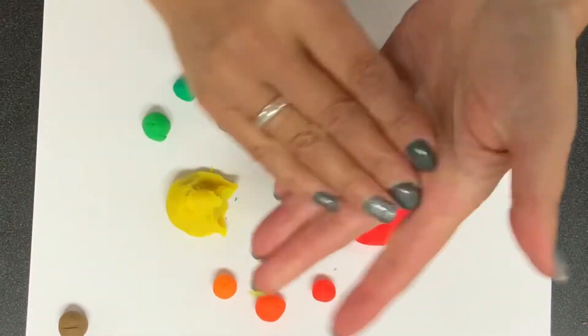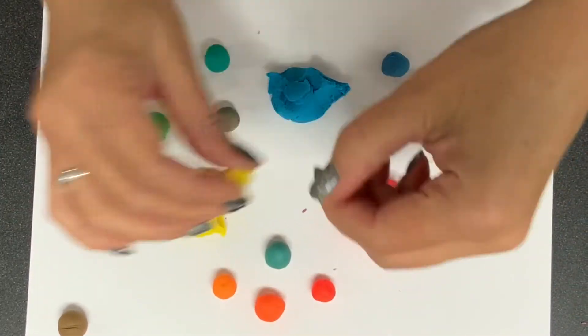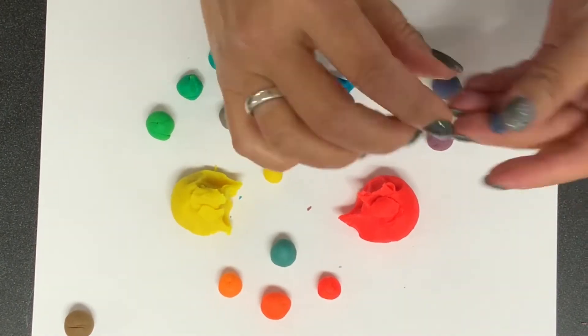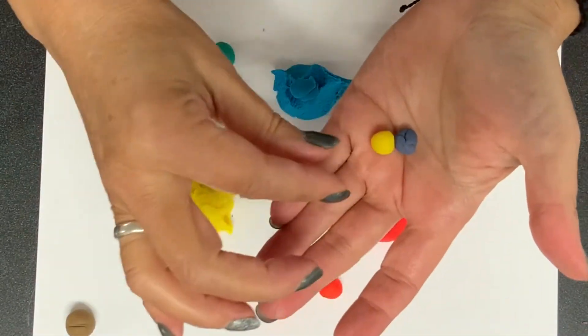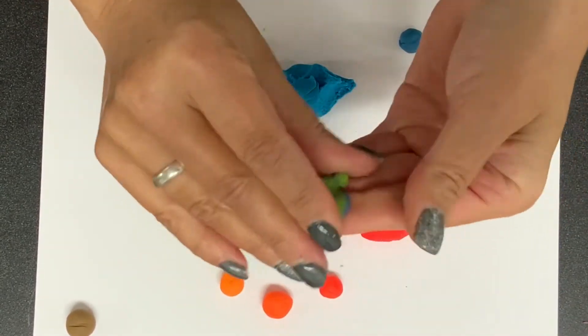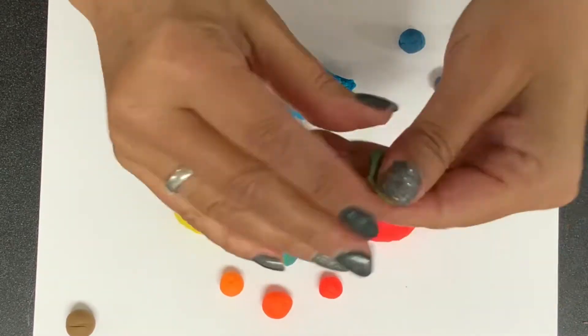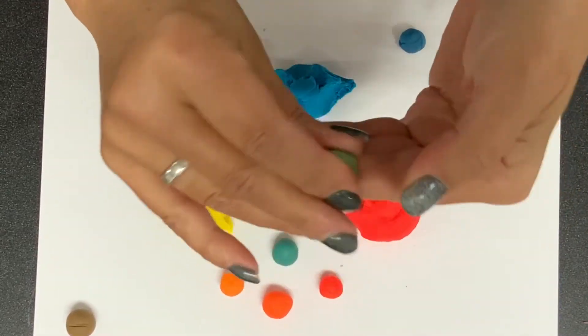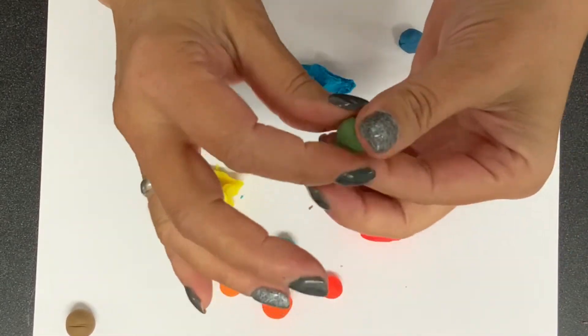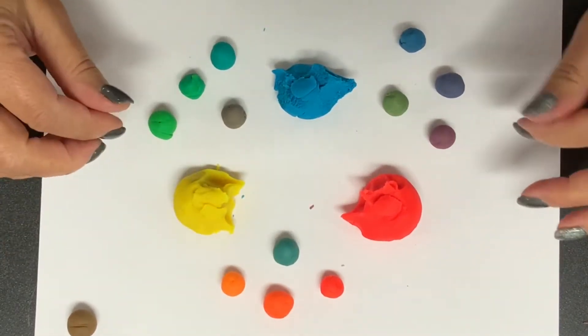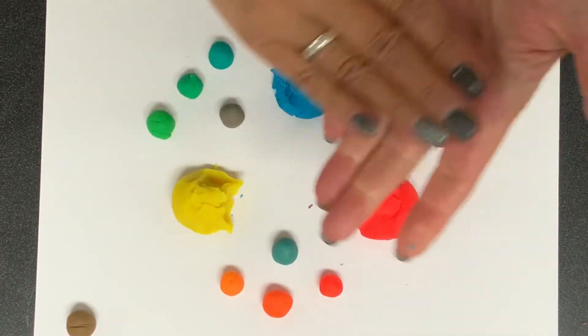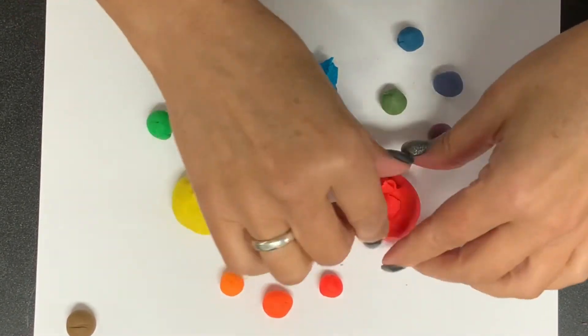And then we are going to take a pea-sized amount of yellow and then a pea-sized amount of, you guessed it, violet. And we're going to mix those together. Violet and yellow are complementary colors as well. So when you have a client that has a yellow base to their hair, you can use purple to neutralize it. What is really common is purple shampoo to help maintain blonde and to keep it a nice, cool color. So that is how our neutralized primary colors look.